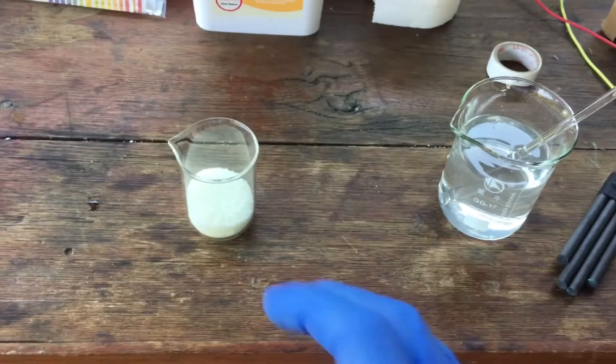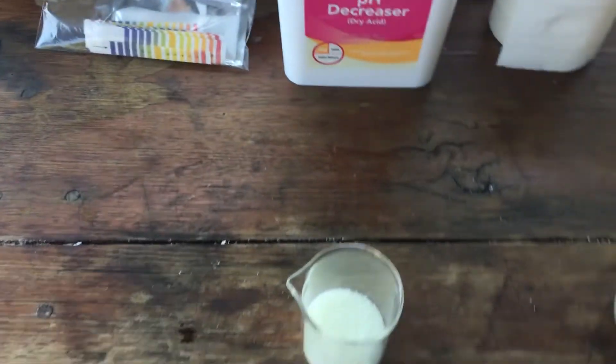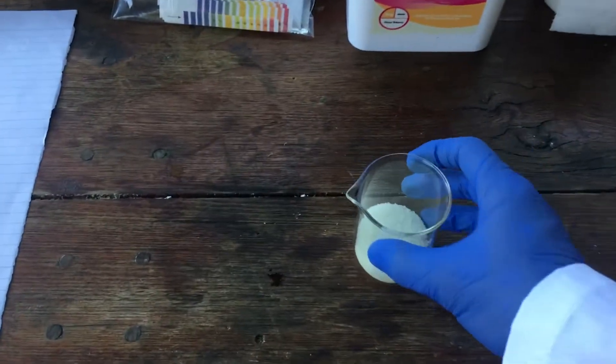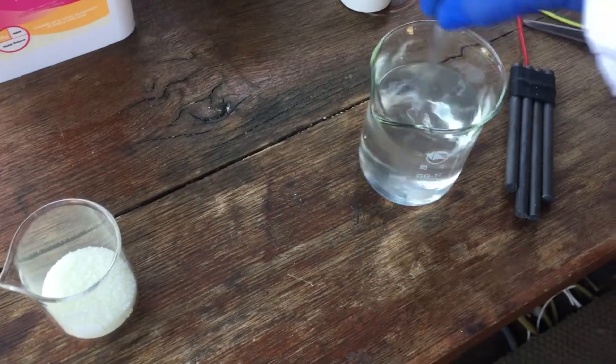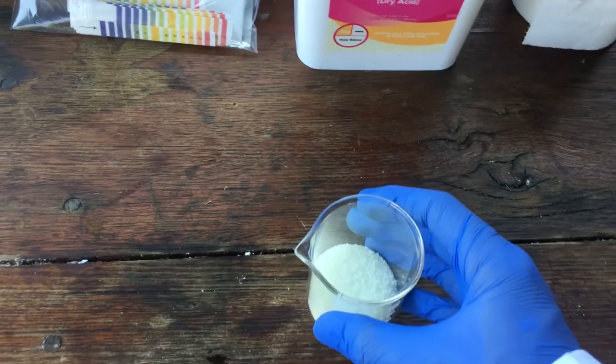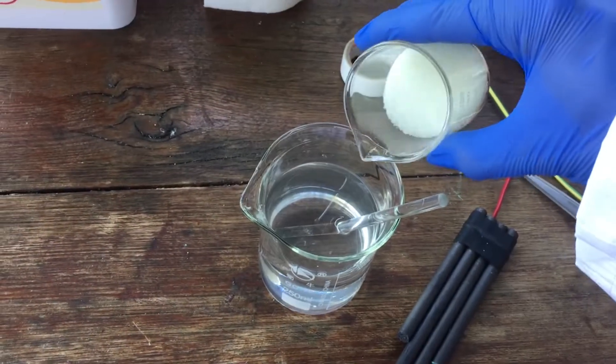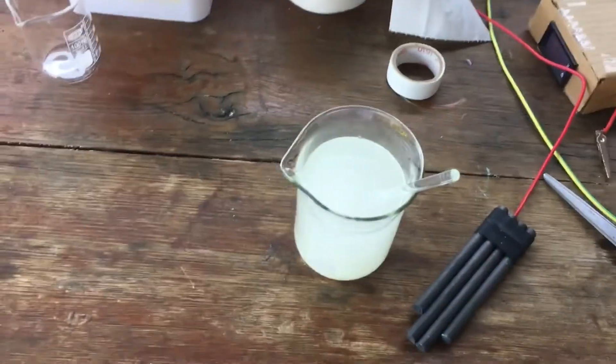What we also need is a stoichiometric equivalent of sodium bisulfate, the same number of moles of sodium bisulfate as we put in sodium bromide to begin with. So, for me, that's about 56 grams. Got a little bit of excess in here, and we'll slowly add that in. We'll leave that to dissolve and set up the power supply and everything.